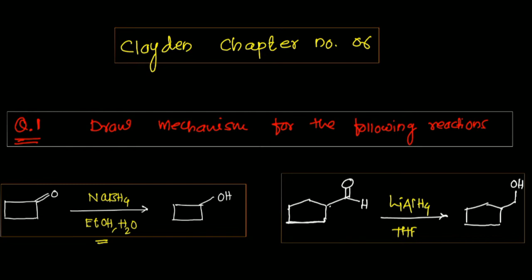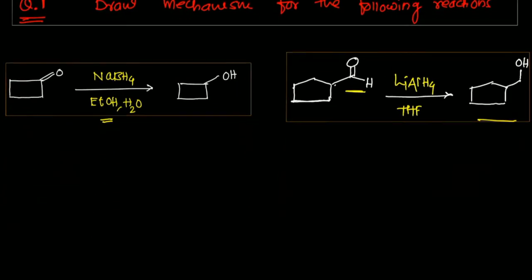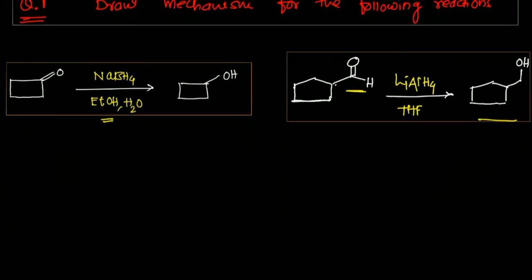In the second reaction, cyclopentane carboxaldehyde is given — a five-membered ring with an aldehyde group attached. When treated with lithium aluminum hydride (LiAlH4) in THF as solvent, it gives an alcohol. This is an example of a nucleophilic addition reaction via hydride ion transfer.